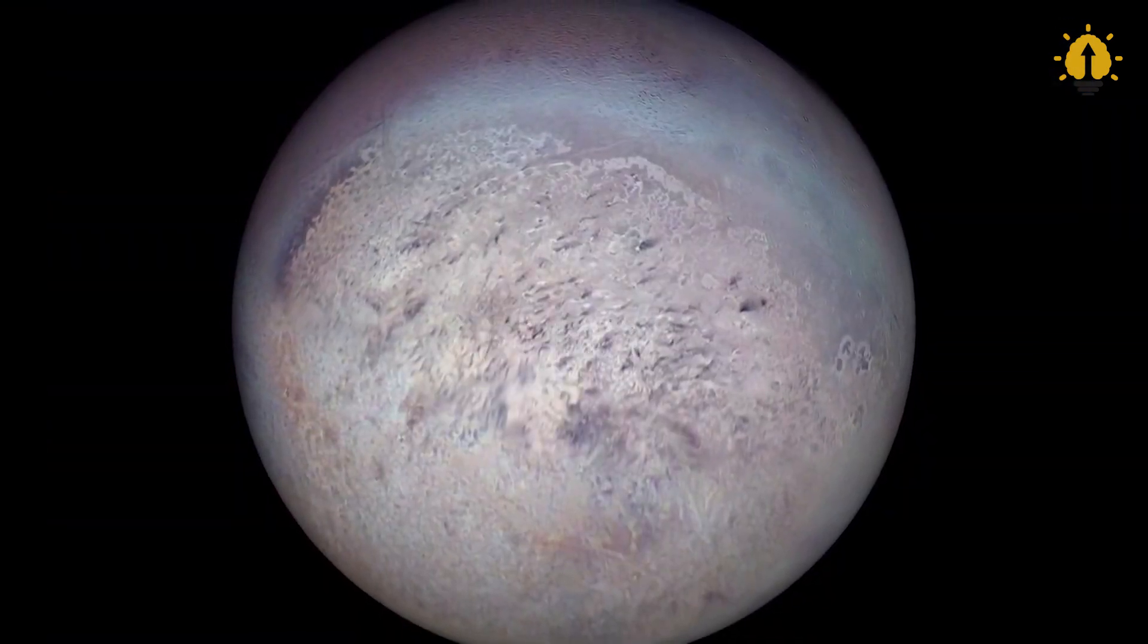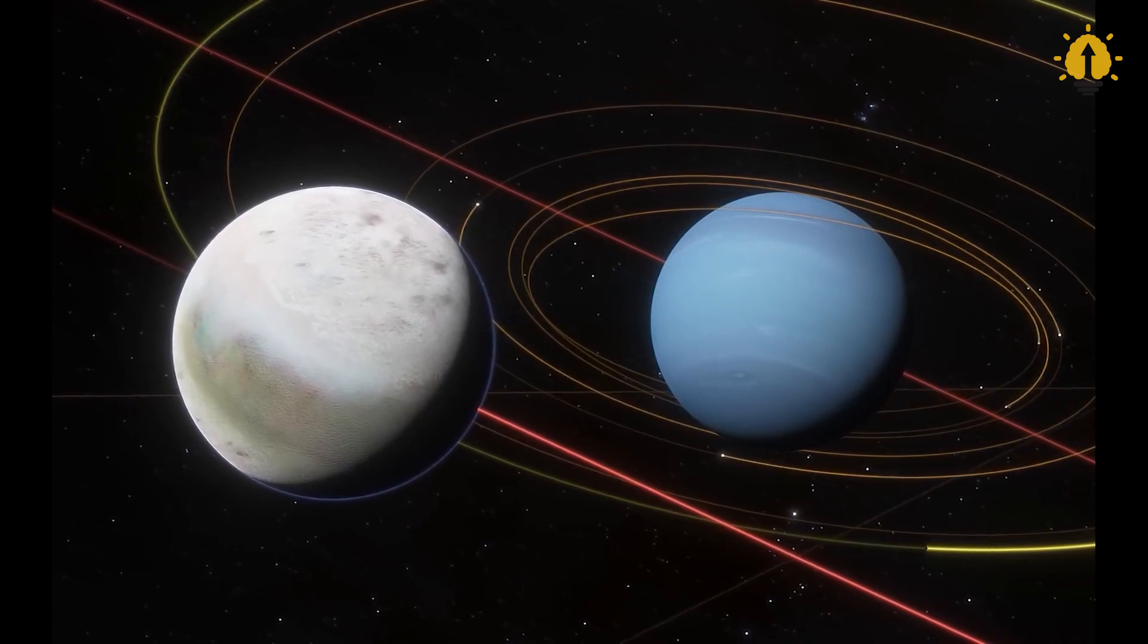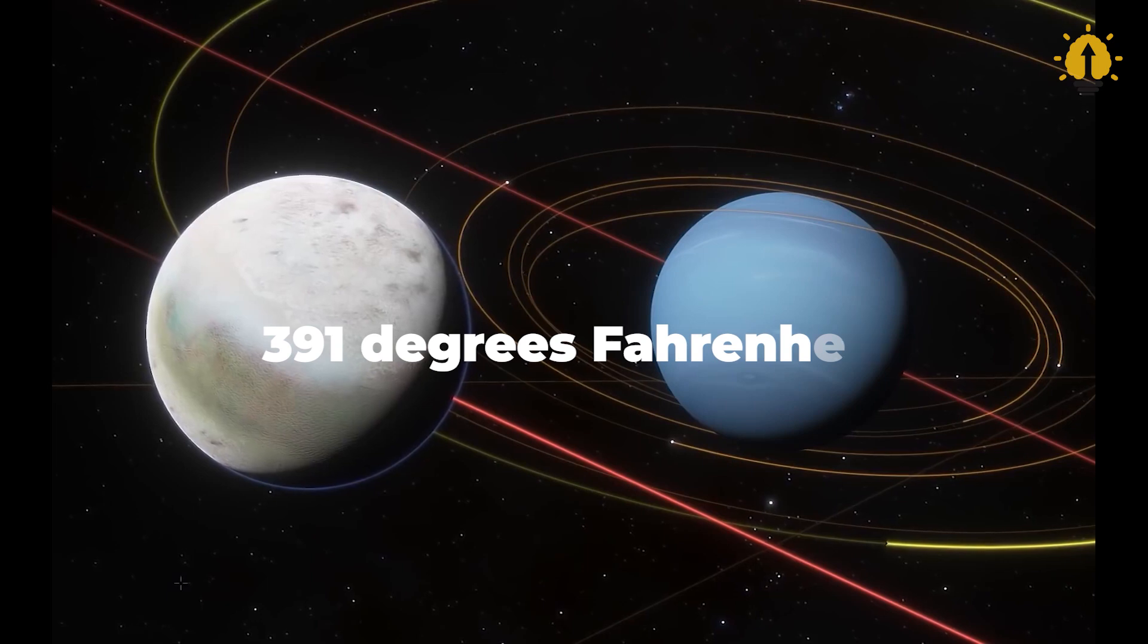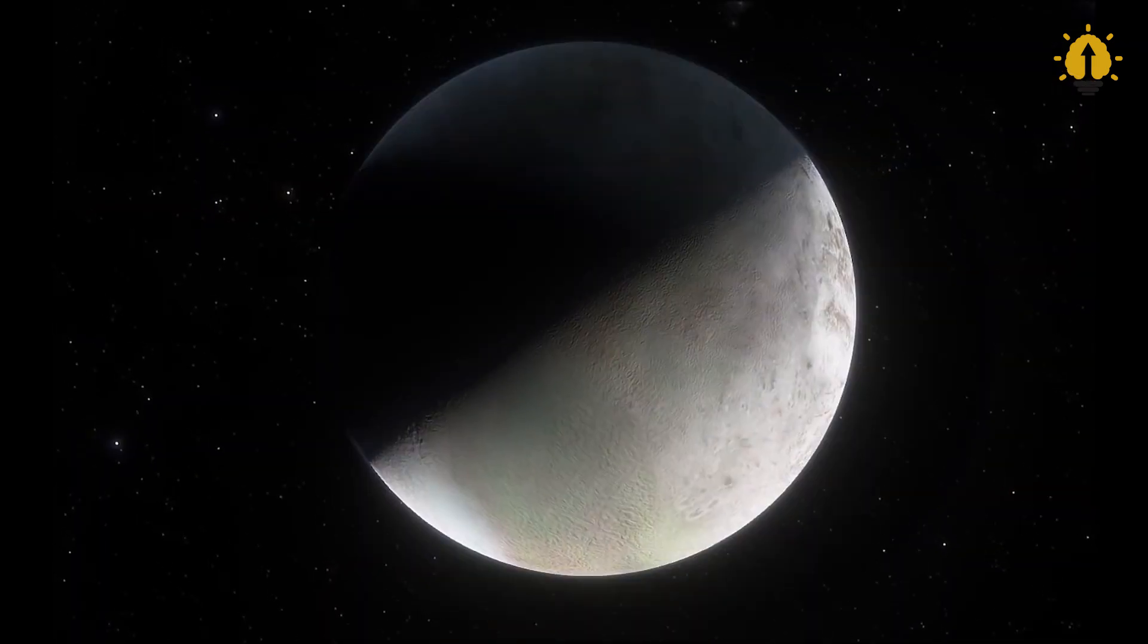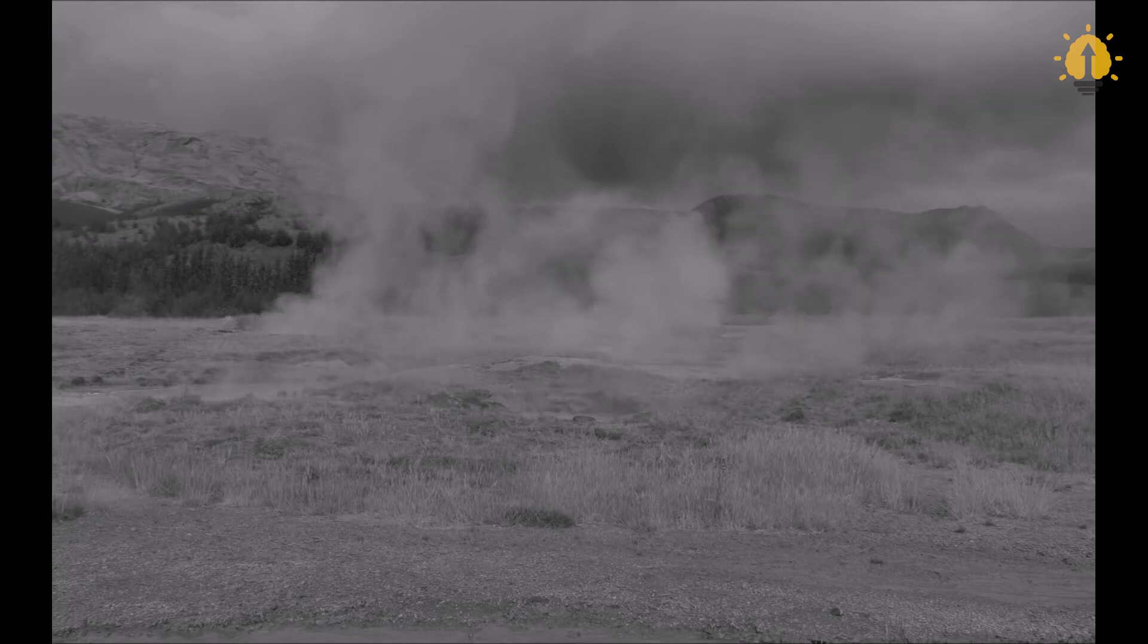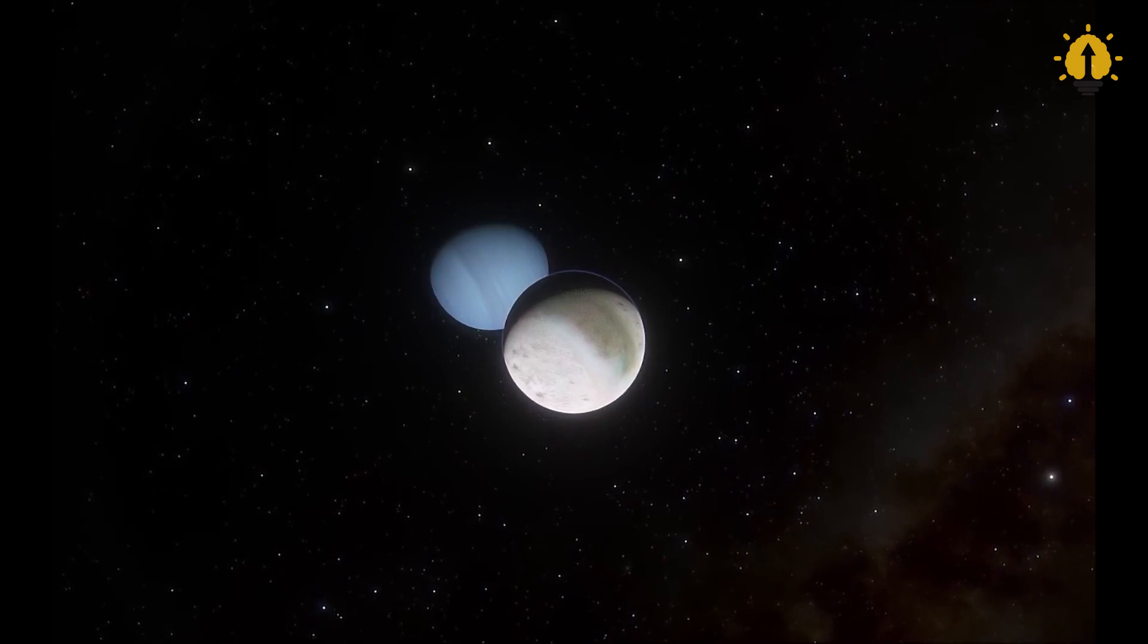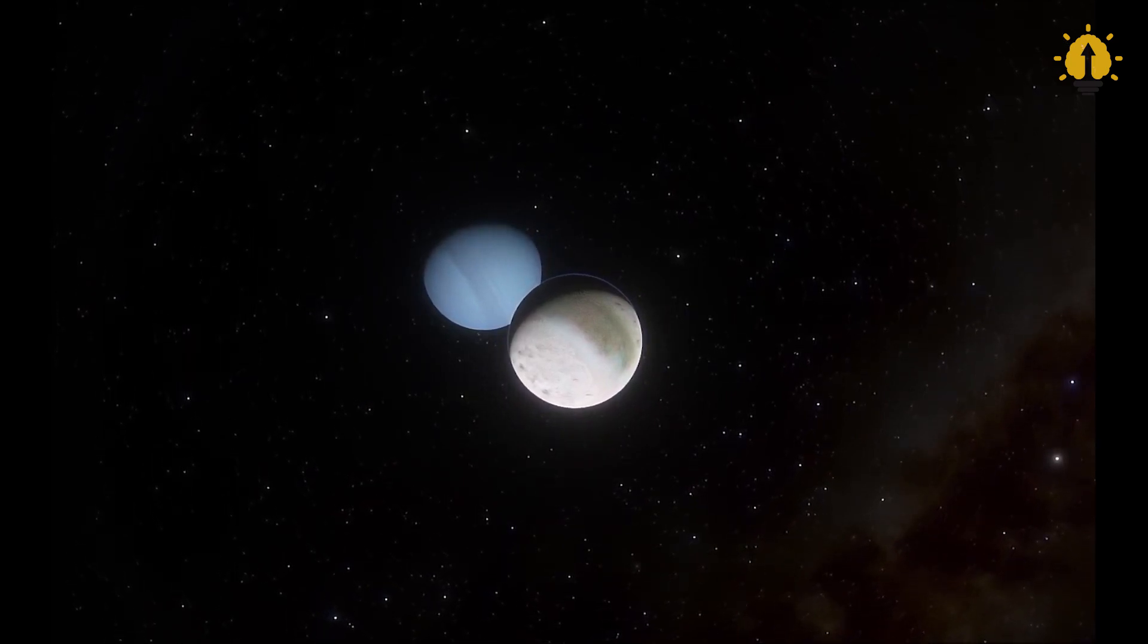Triton, Neptune's largest moon, was found to be one of the coldest places in the solar system, with surface temperatures plummeting to minus 391 degrees Fahrenheit, minus 235 degrees Celsius. Triton also exhibited unique features, including ice volcanoes that ejected nitrogen gas and icy particles five miles into its thin atmosphere. These discoveries expanded our understanding of the variety and complexity of celestial bodies in our solar system, even in the outermost regions.